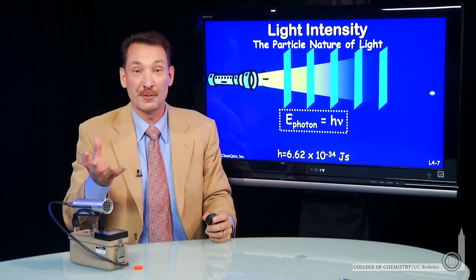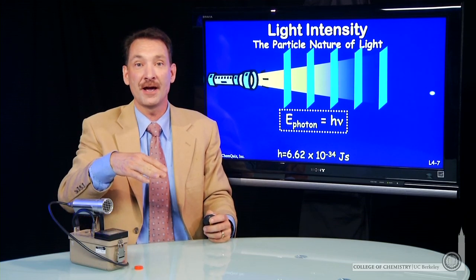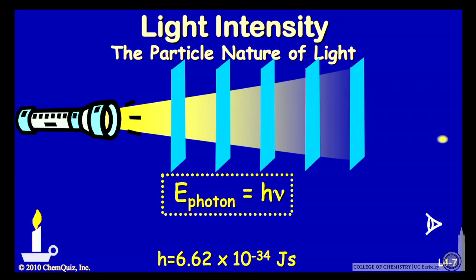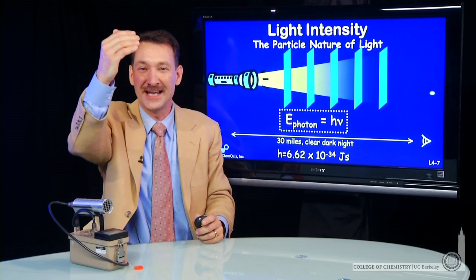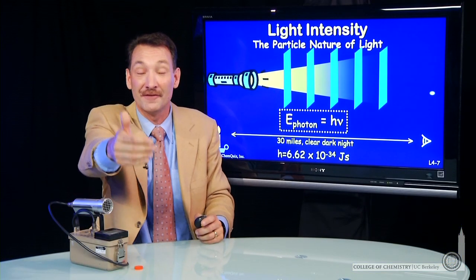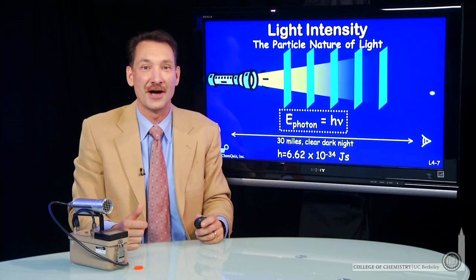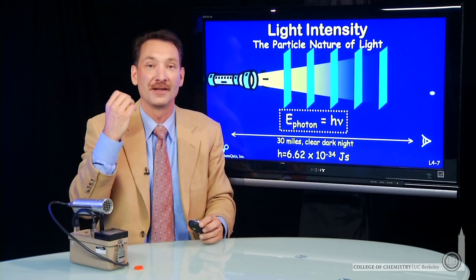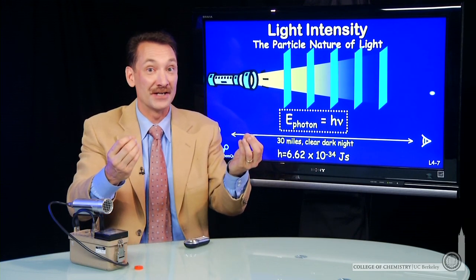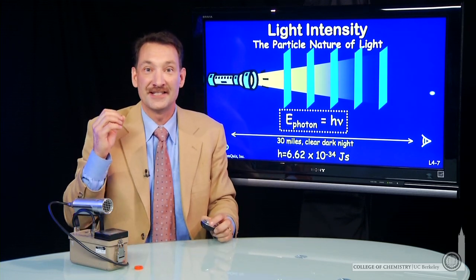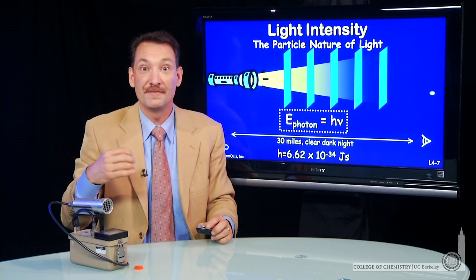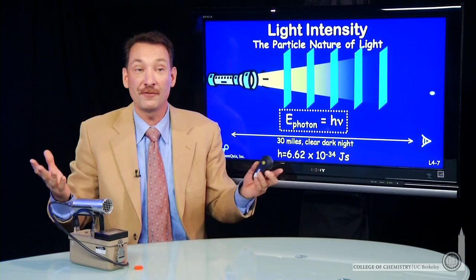Visual perception has been quantitated for a long time. We've said that the limits of human perception are a candle on a clear dark night at 30 miles away. That's when the intensity is at the level of individual photons hitting your eye. So light has a particle nature, just like matter has a particle nature.